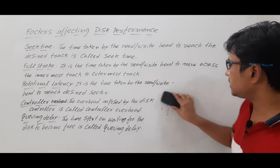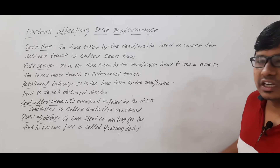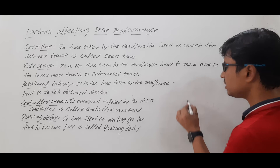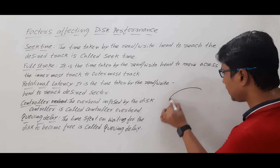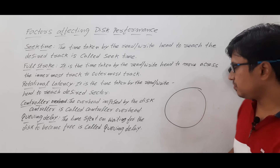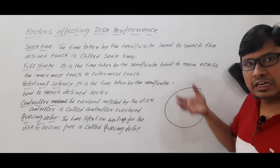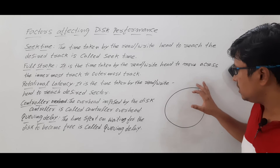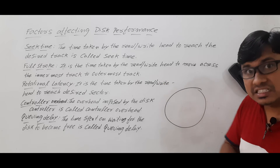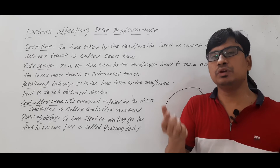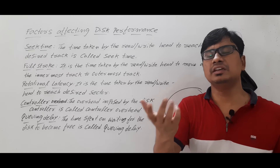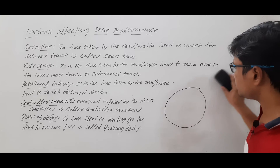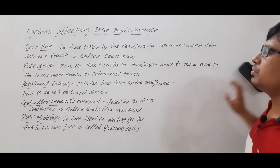Now let me discuss full rotational time and rotational latency. The platter rotates using the spindle, and the read-write head stays in place and can only move forward or backward. The time taken for the platter to rotate 360 degrees is called full rotational time. This is usually expressed in terms of RPM — for example, 3000 RPM or 2000 RPM.